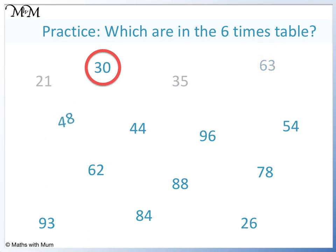48 is even. 4 plus 8 equals 12, which is in the 3 times table, so 48 is a multiple of 6. 44 is even, but 4 plus 4 equals 8. 8 is not a multiple of 3, therefore 44 is not in the 6 times table.